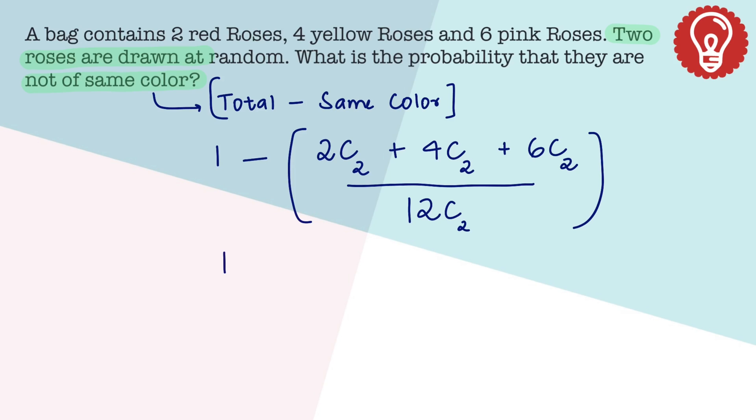And on expanding these values, 2C2 is 1, 4C2 is 6, and 6C2 is 15 by 12C2 which is 66. And that becomes 22 by 66 or that is 1 by 3. So 1 minus 1 by 3 which is 2 by 3.